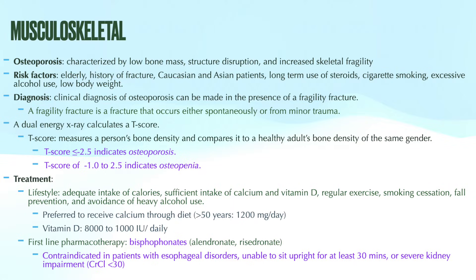Another method for clinical diagnosis is using a dual-energy x-ray to calculate a patient's T-score. The T-score is very important to know for your boards exam. It measures a person's bone density and compares it to a healthy adult of the same gender, representing the number of standard deviations above or below the average for their gender. A T-score of negative 2.5 or less indicates osteoporosis — that's an important number to remember.